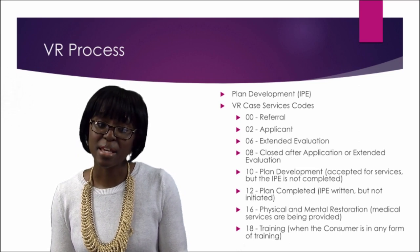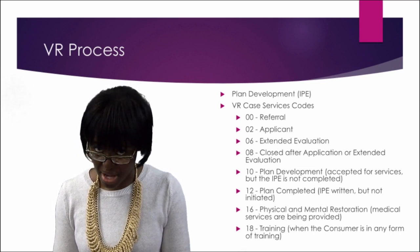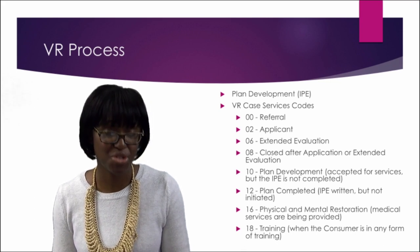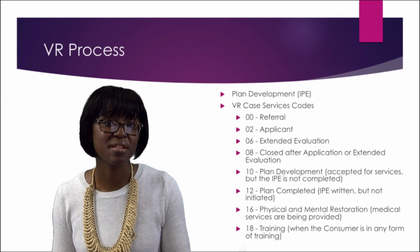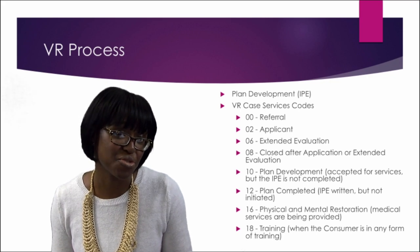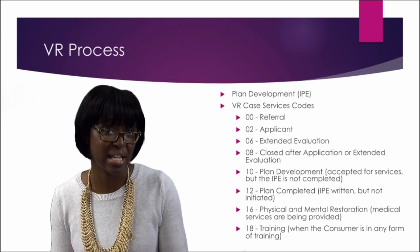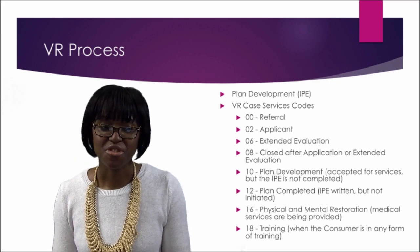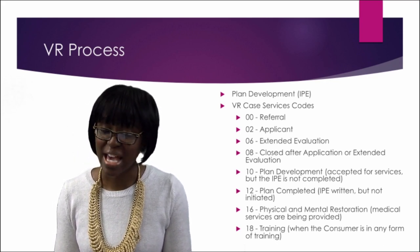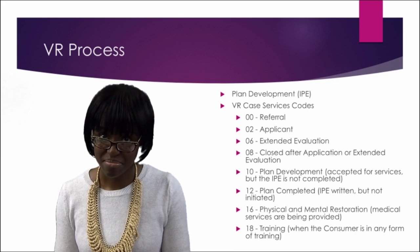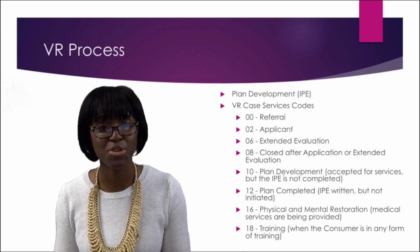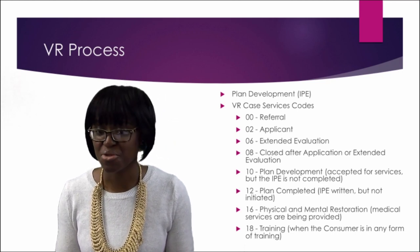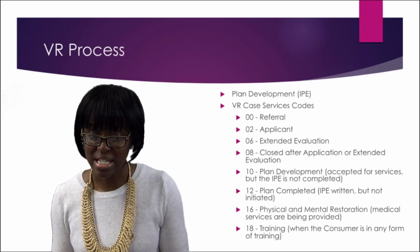Status 10 means they've been accepted for services — you found them eligible — so they're in plan development, meaning you're speaking with the client and talking about what vocational goals they may be interested in. Status 12 means that the IPE has been written. It's just been written at this point — you and the client have gone over the vocational goals and services, but they have not begun yet.